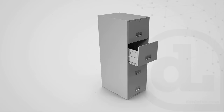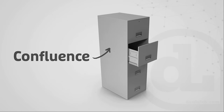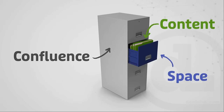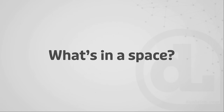An analogy I like to use for spaces is a filing cabinet. If we think of Confluence as the overall filing cabinet, then we can think of each drawer in that filing cabinet as a space. Inside the drawer, we can put whatever sort of content we want — documents, images, standards, processes, and so on. And just like a drawer on a filing cabinet, we can lock that drawer to determine who has access to the content inside.